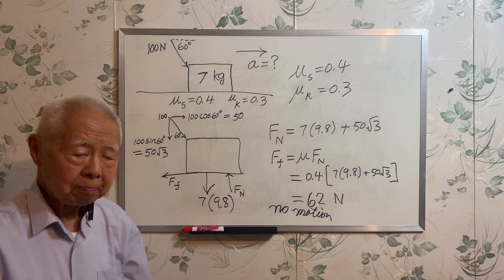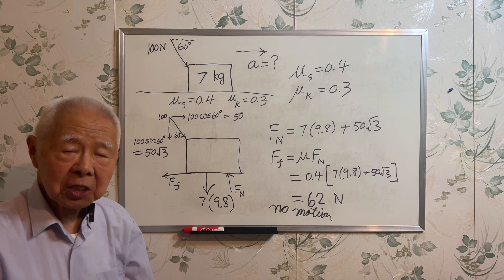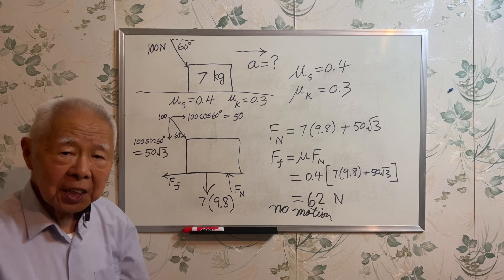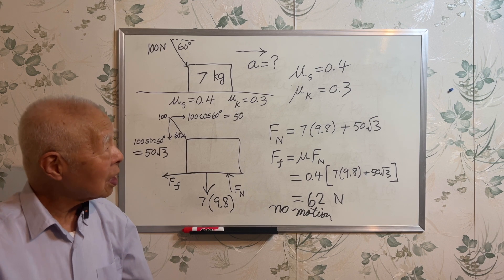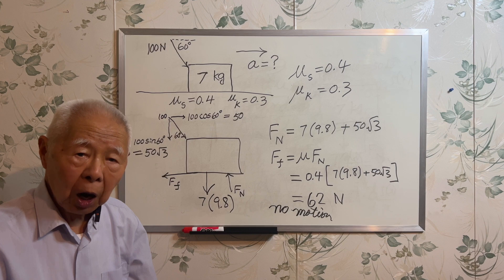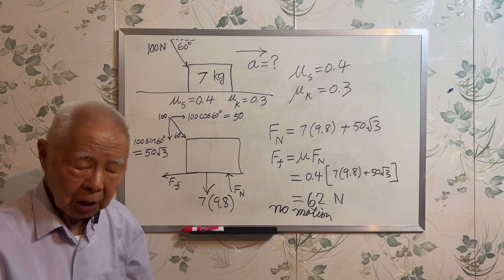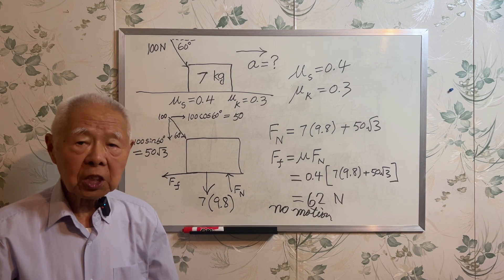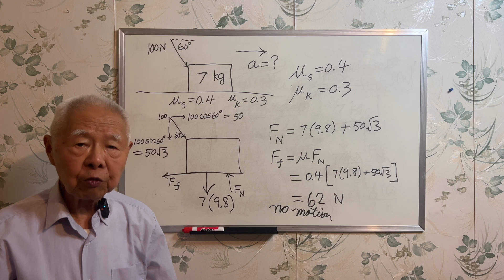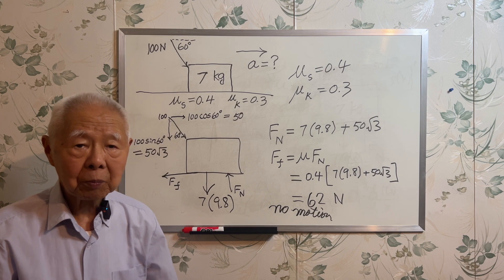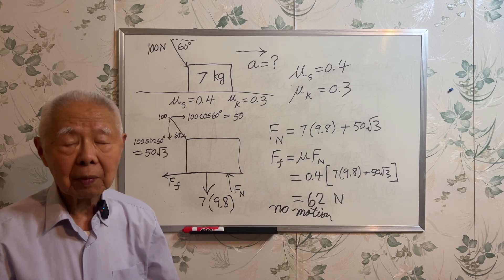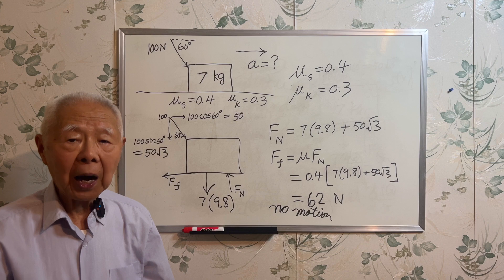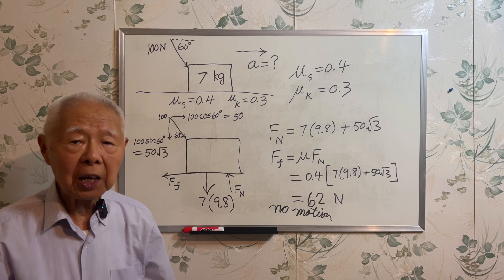So that's the end of the problem, but we can continue to ask a question. The kinetic coefficient of friction is given. Can we discuss the problem using the kinetic coefficient of friction? The difference between static friction and kinetic friction is that when the body is not moving, the friction force is given by the static force of friction — in this case, 62 Newtons. When the body is moving, the friction force is reduced; it is given by the kinetic coefficient of friction multiplied by the normal force.